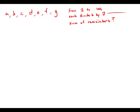Seven different numbers are selected from the integers from 1 to 100, and each number is divided by 7. What is the sum of the remainders?